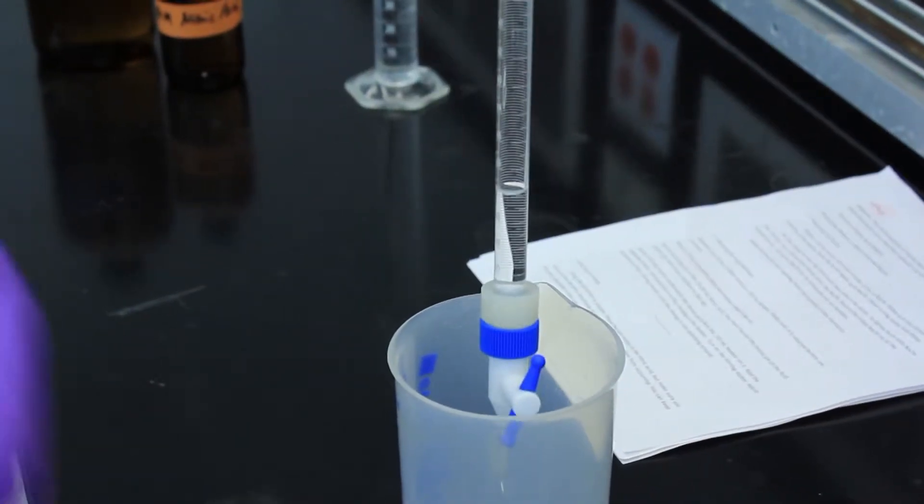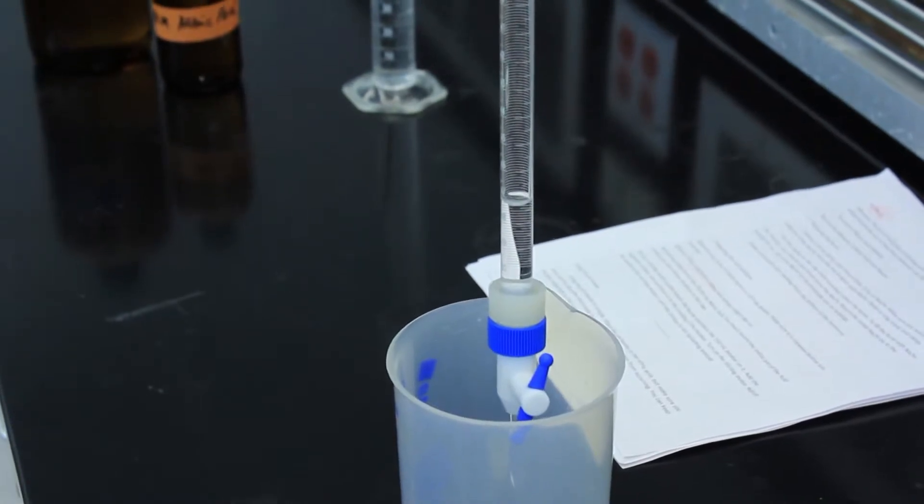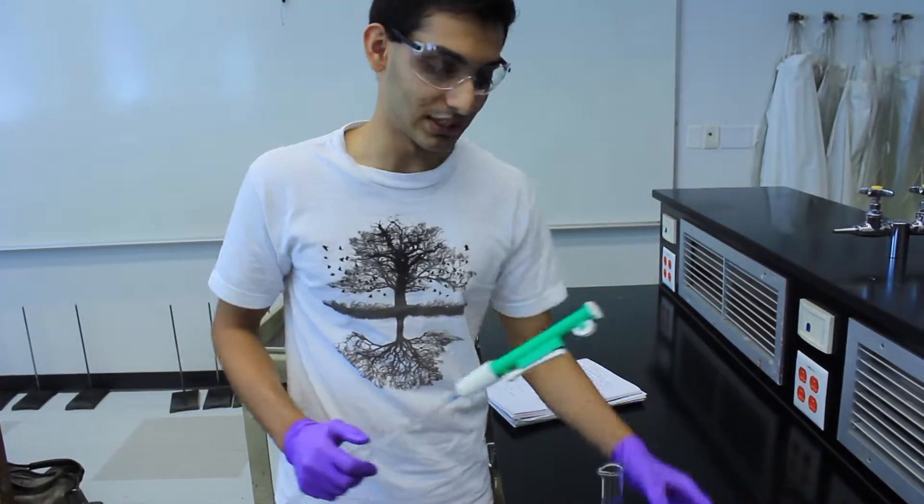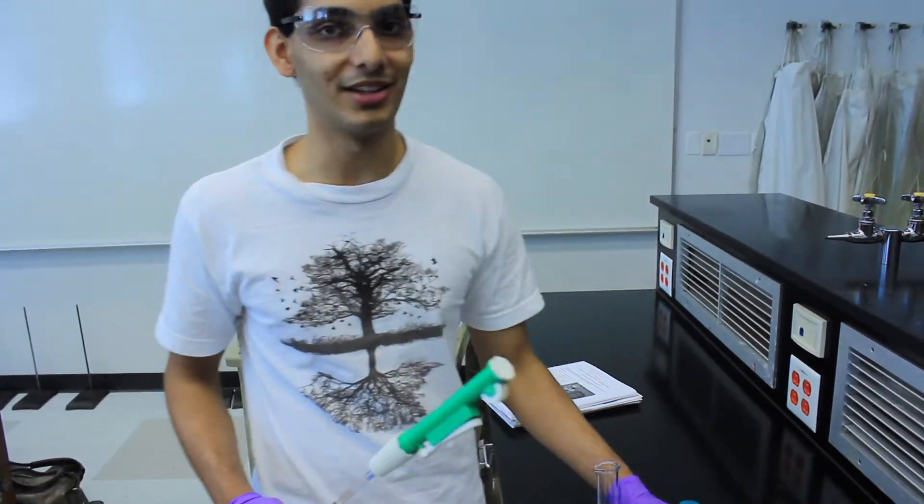Go ahead and rinse it with sodium hydroxide again just to make sure it's standardized. Use a volumetric pipette and a pipette pump to extract 25 milliliters of nitric acid.